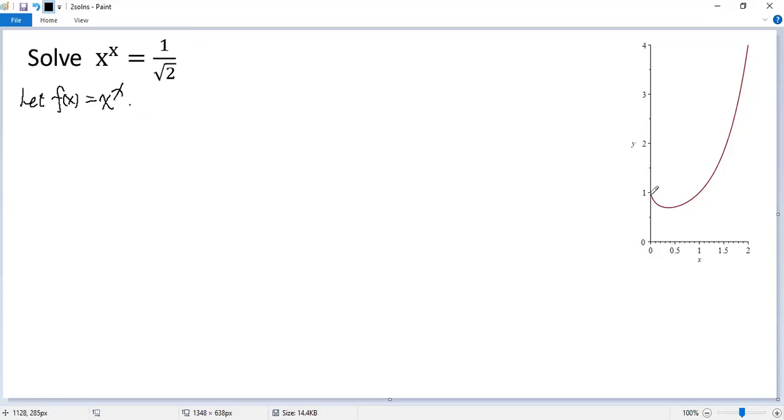It seems to pass through this point 0 and 1. Actually, you cannot take x equals 0 because 0 to the power of 0 is undefined. So it looks like this one. It also has a minimum point here.